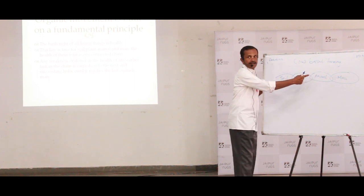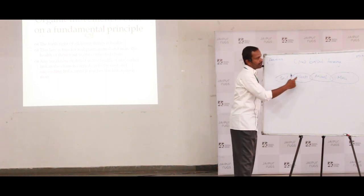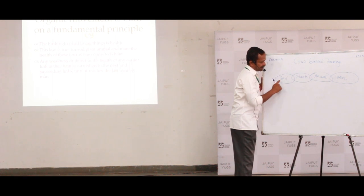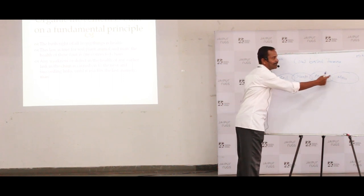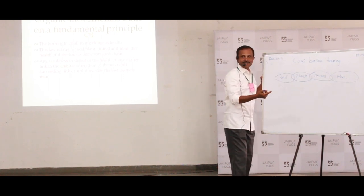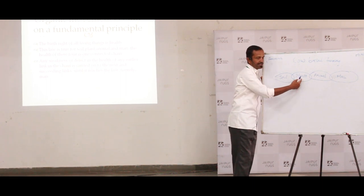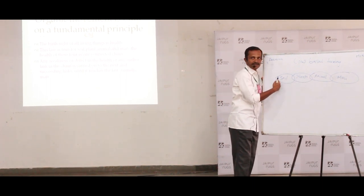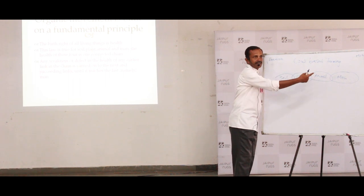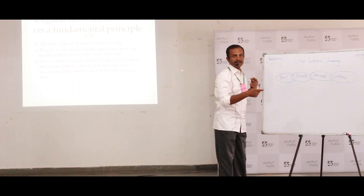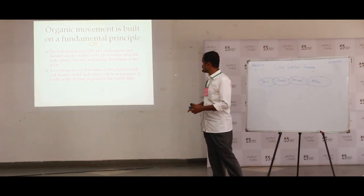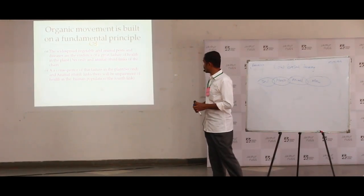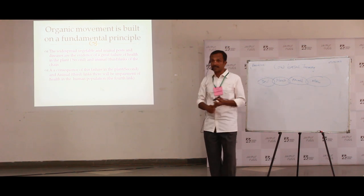There is one chain: soil, plants, animal, man. Any problem with the soil will affect plants. Any problem with plants will affect animals. Ultimately it reaches human beings. So any problem here means there is a problem here — it is a linked chain. This is the principle of organic farming. The widespread vegetable and animal pest diseases is the evidence of a great failure of health in the plant and animal links of the chain.